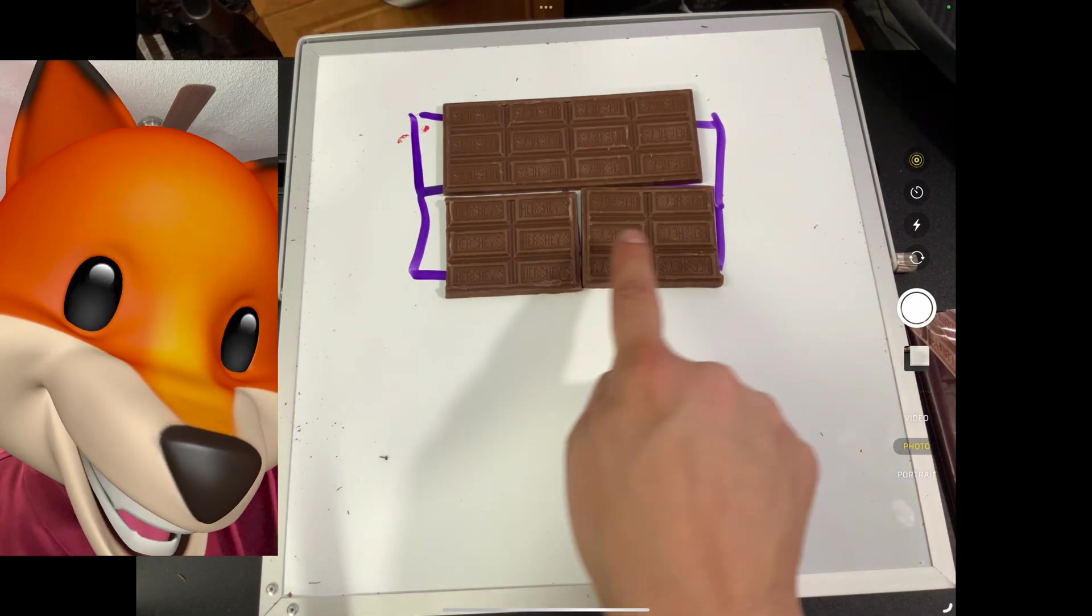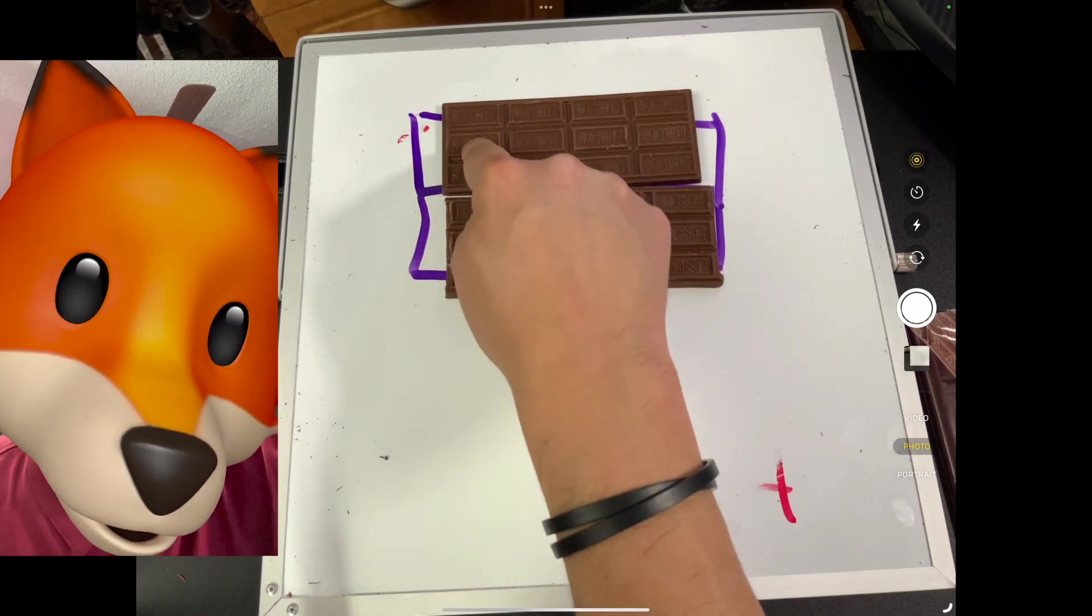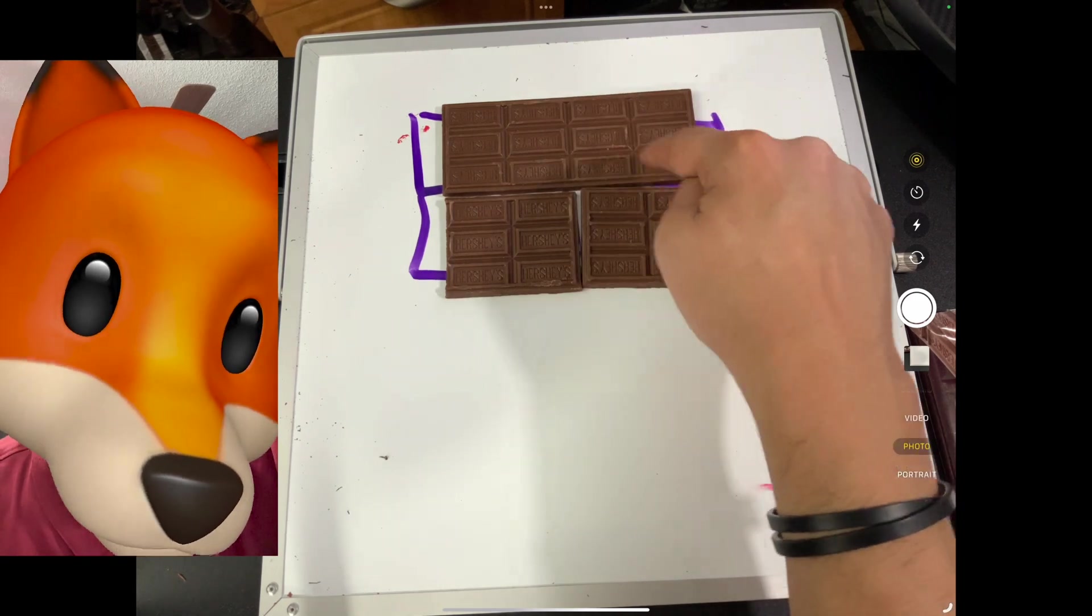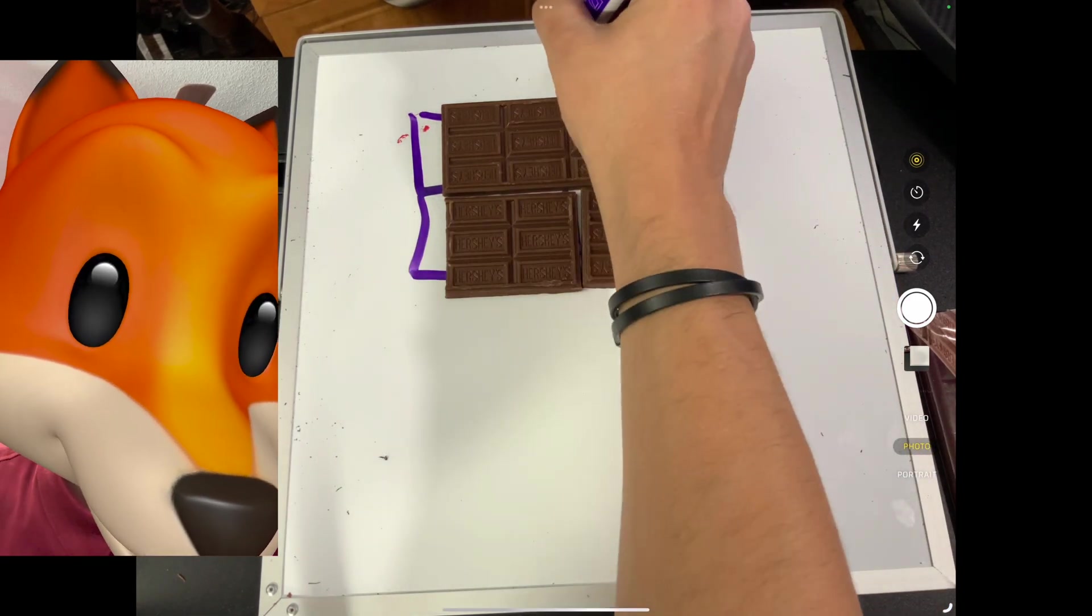Oh, these parts together are a whole or a total bar. One, two, three, four, five, six. One, two, three, four, five, six. And all of them together gives us 12. Easy peasy.